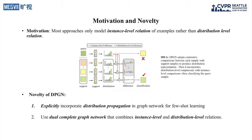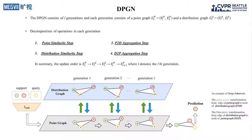Most few-shot learning approaches only model instance-level relations of examples. We extend this idea further to explicitly model the distribution-level relations of each example to all other examples. DPGN conveys both the instance and distribution-level relations in each few-shot learning task.